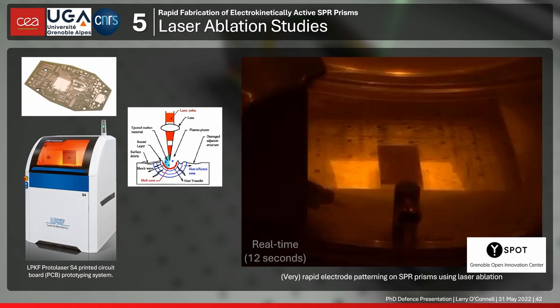What we found was that we could adapt a printed circuit board prototyper based on laser ablation. This machine is normally used for prototyping printed circuit boards at length scales much larger than the electrode arrays we needed. My colleague Bryce Poirier and I found that by pushing the limits of the device and playing around with the pattern parameters, we could get very good results in patterning these electrode arrays. I'm going to show you the entire process for producing them by laser ablation.